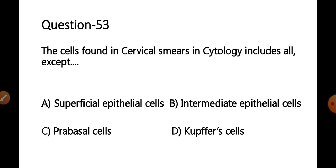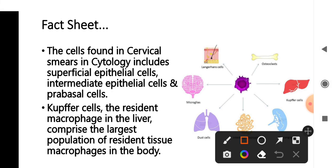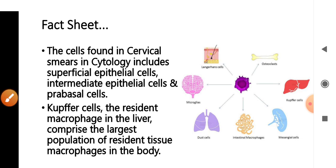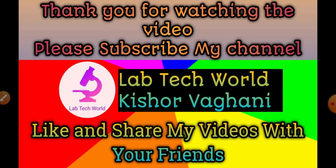Question 53: Cells found in cervical smear in cytology include all except — options: A) superficial epithelial cells, B) intermediate epithelial cells, C) parabasal cells, D) Kupffer cells. Cervical smears in cytology include superficial epithelial cells, intermediate epithelial cells, and parabasal cells. Kupffer cells are resident macrophages found in the liver — the largest population of resident tissue macrophages in the human body. Different organs have tissue macrophages known by different names; in the liver they are called Kupffer cells. The correct answer is option D — Kupffer cells.